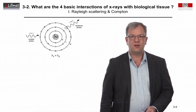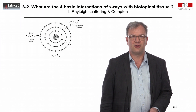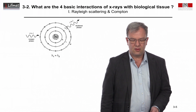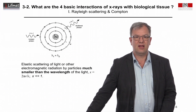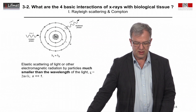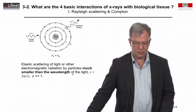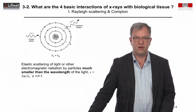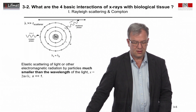In the next two sections I'd like to discuss the four fundamental interactions of X-rays with biological tissue. Let's start with Rayleigh scattering. This happens when the light interacts with particles whose dimensions are much smaller than the wavelength of the light. The dimension parameter X is defined as 2πr divided by lambda, and for Rayleigh scattering to occur, this parameter X has to be much smaller than 1.